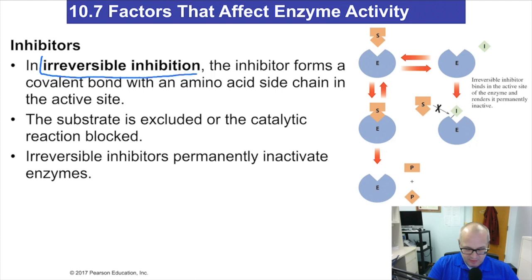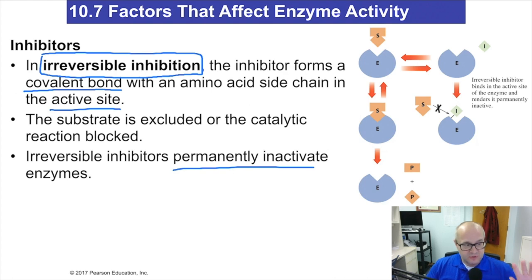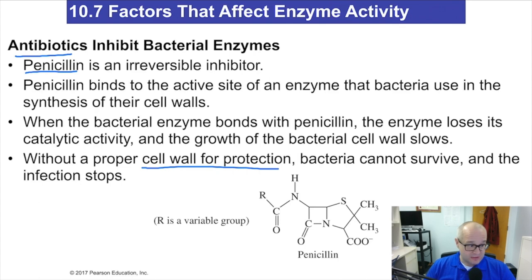Now we have irreversible inhibitors. An irreversible inhibitor will form a covalent bond with an amino acid in the active site — and once it does that, it's over. The enzyme will no longer work; it permanently inactivates the enzyme. Drugs are built like this — penicillin is a great example. It completely shuts down the catalytic activity. Antibiotics like penicillin react with enzymes that help build cell walls for bacteria. When they do that, the bacteria can no longer build its cell walls and will eventually die — and that's how you'll feel better.